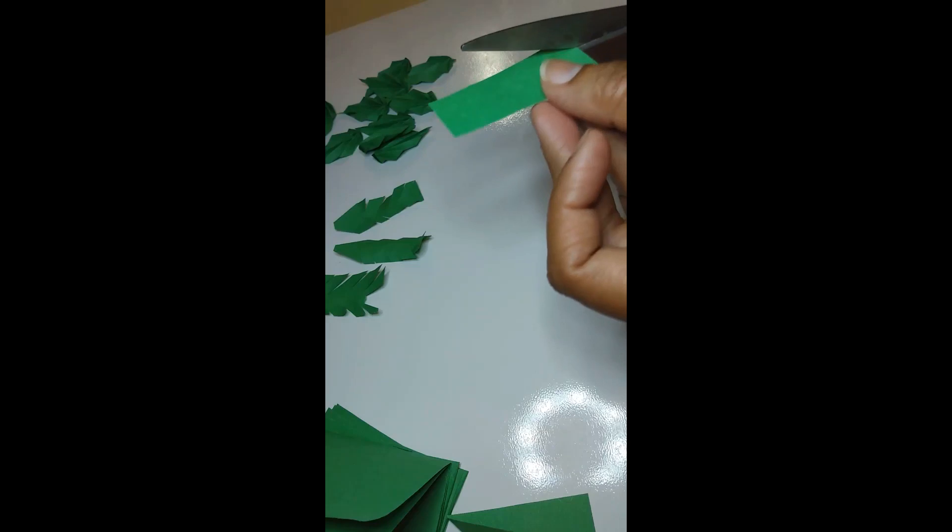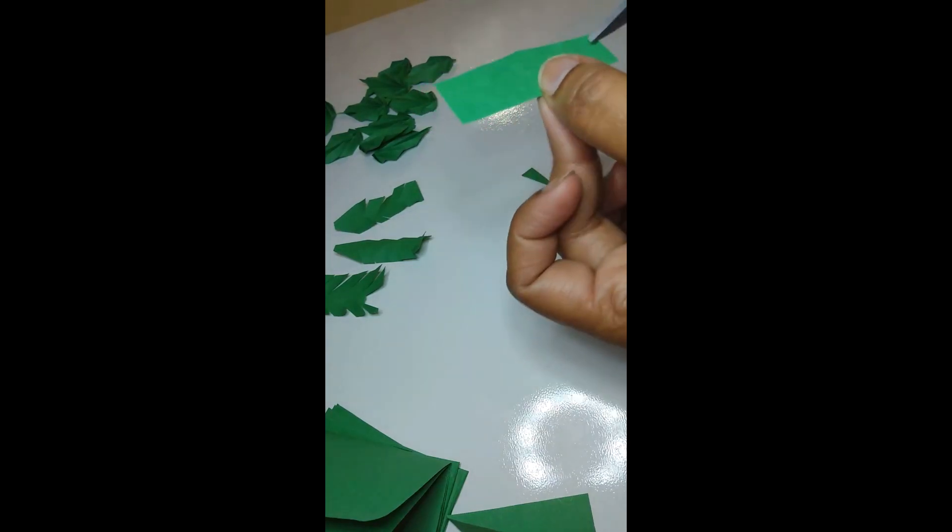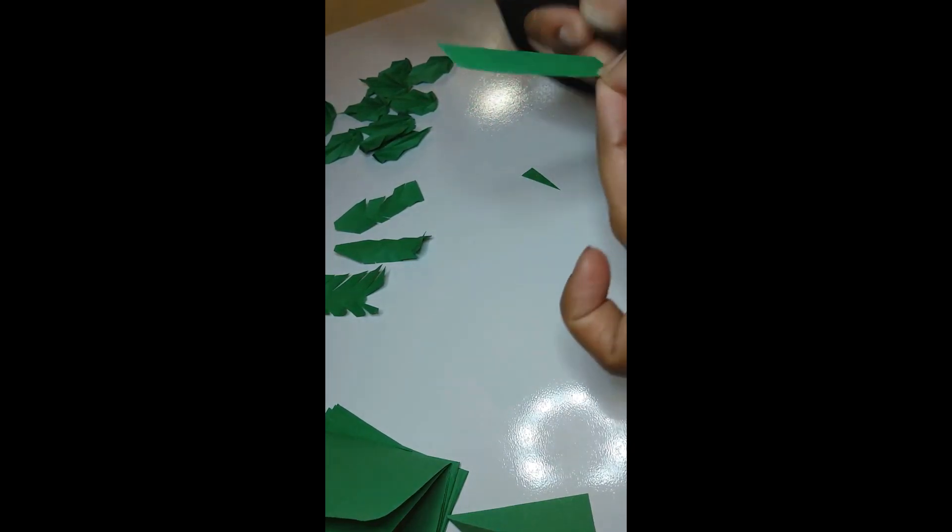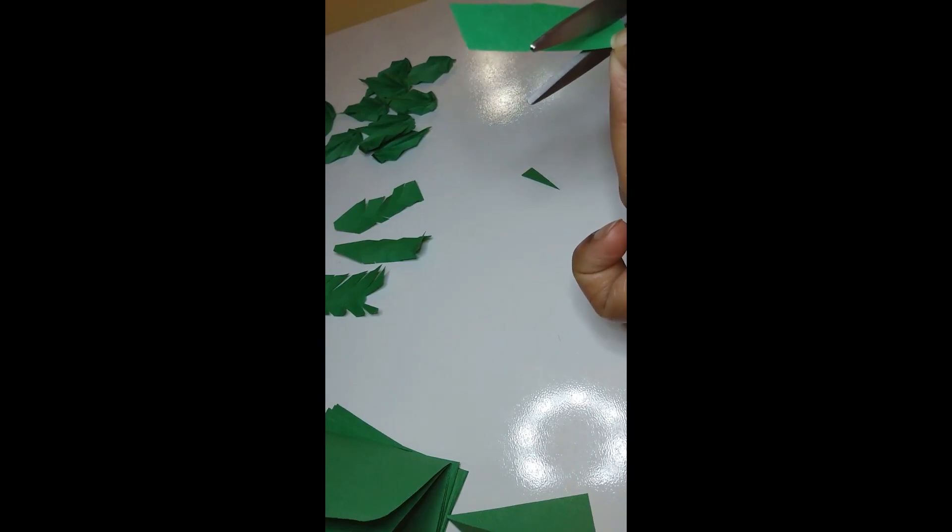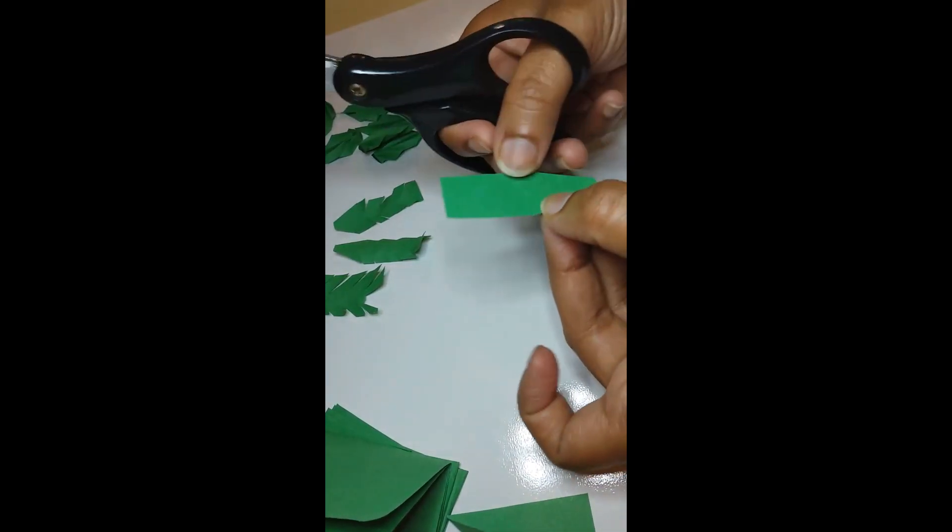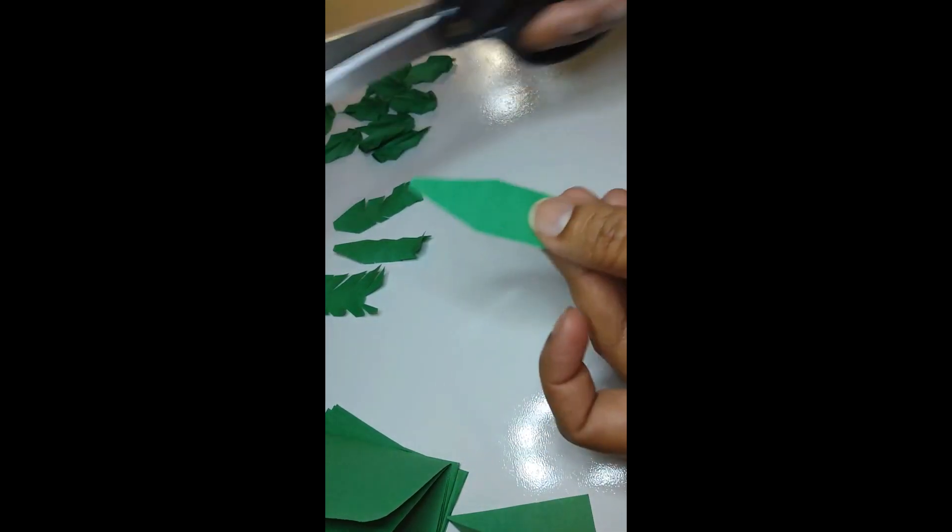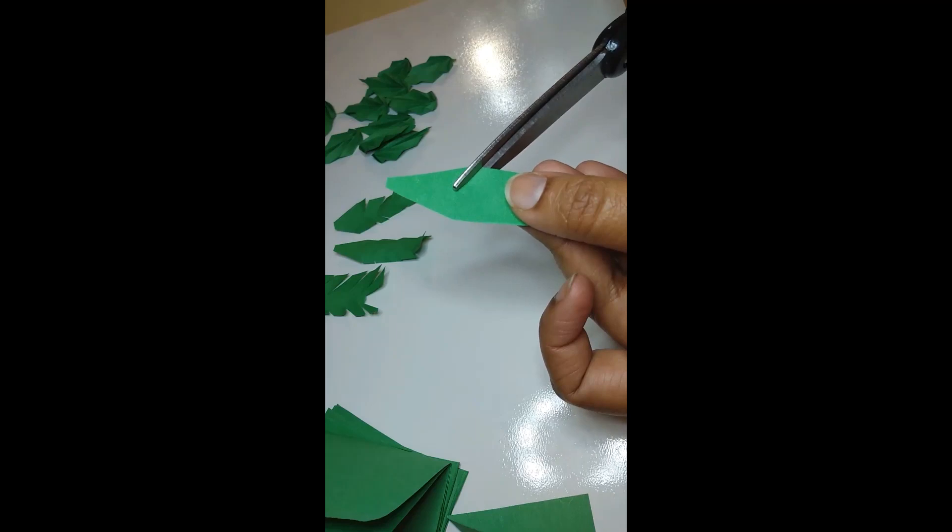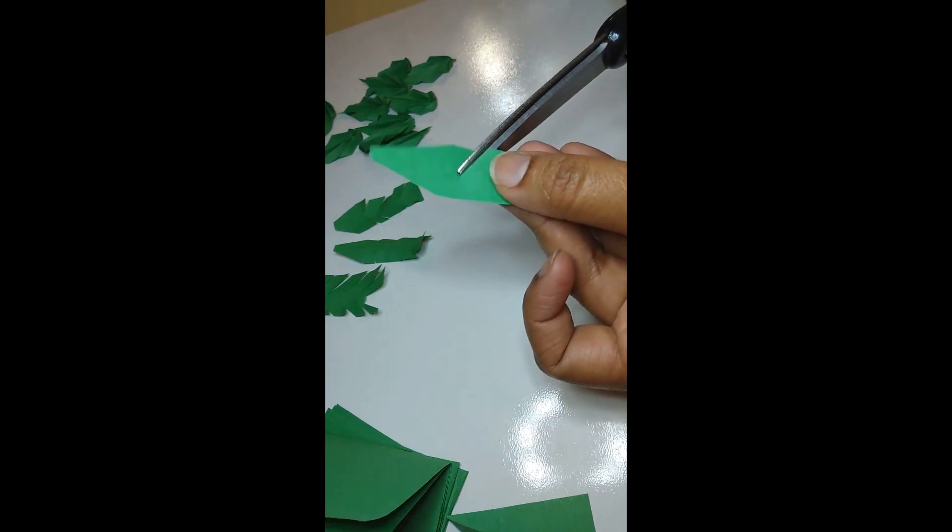Now after taking the edge, cut that one into V shape. Then turn it on and slightly cut the edges.